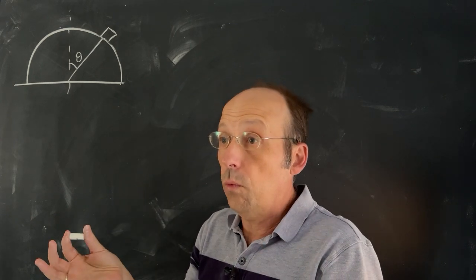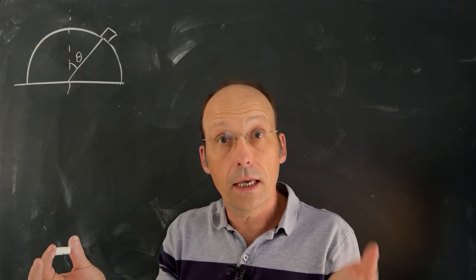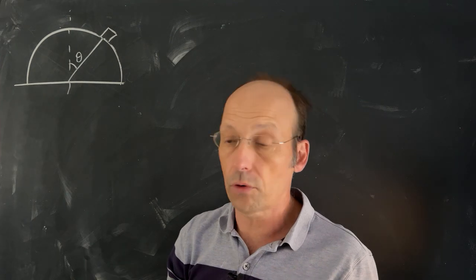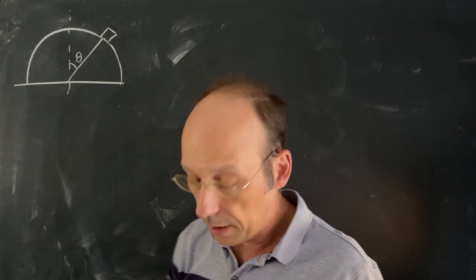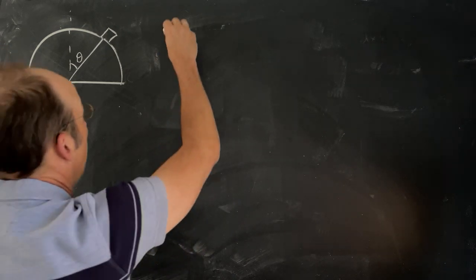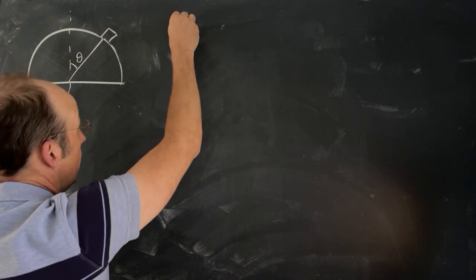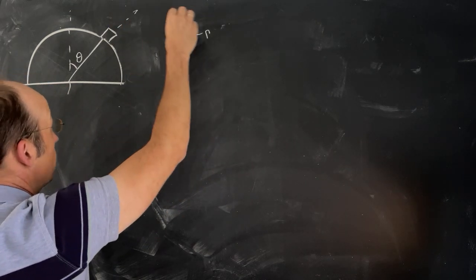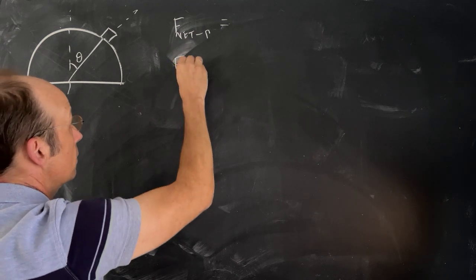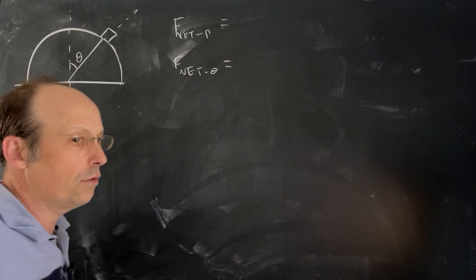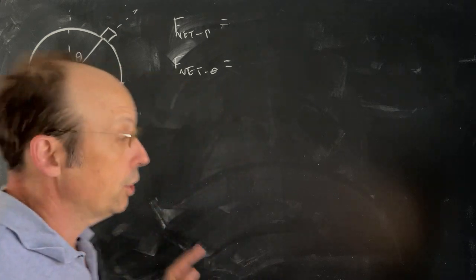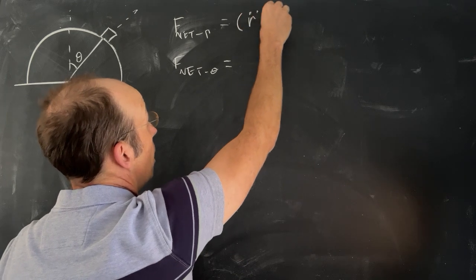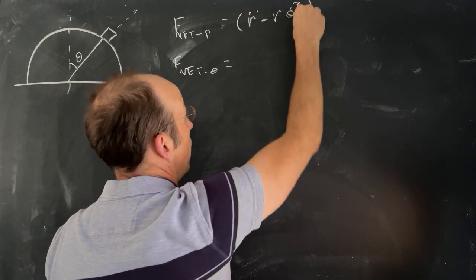So let's start off with Newton's second law in polar coordinates. I've used the angle theta, so we're going to use polar coordinates in terms of theta. In polar coordinates, I can break the net force into the R direction and the theta direction. In the R direction, we have R double dot minus R theta dot squared, where double dot means second derivative with respect to time.